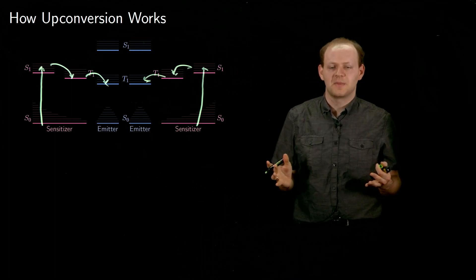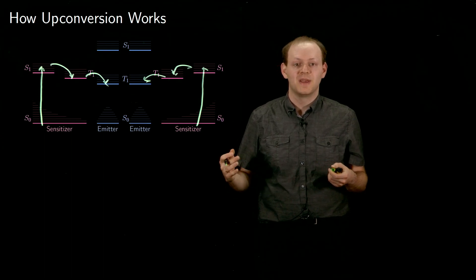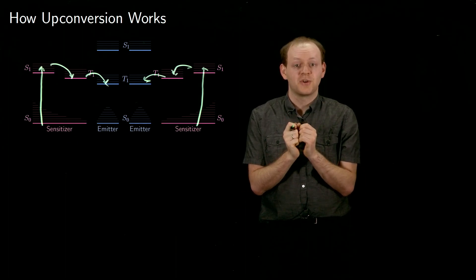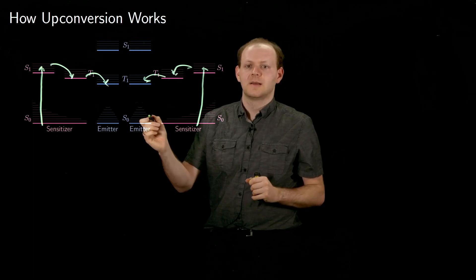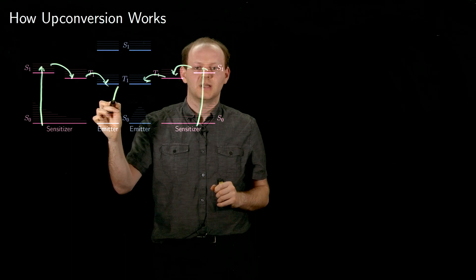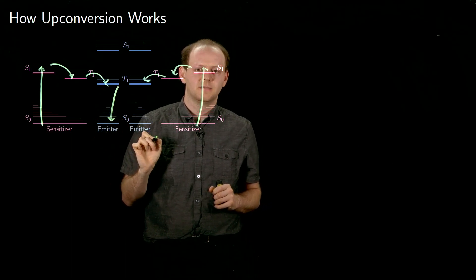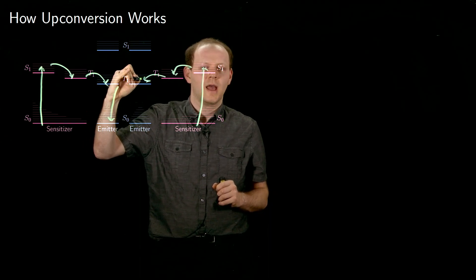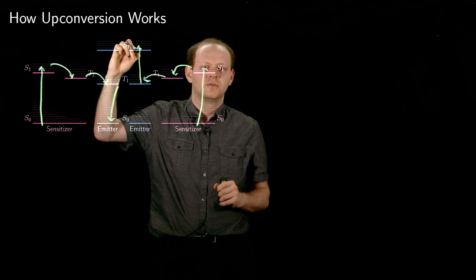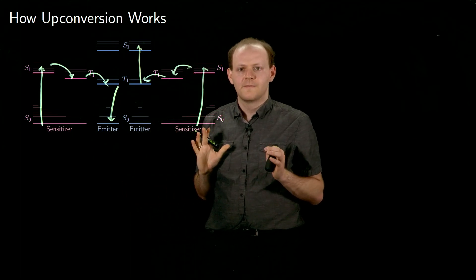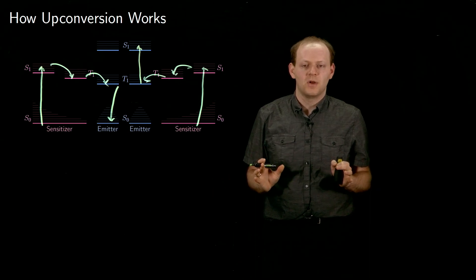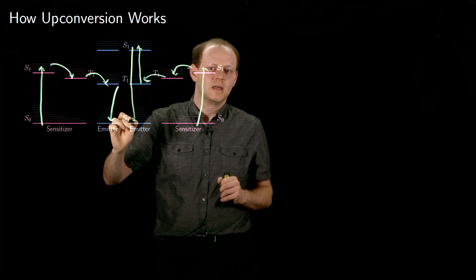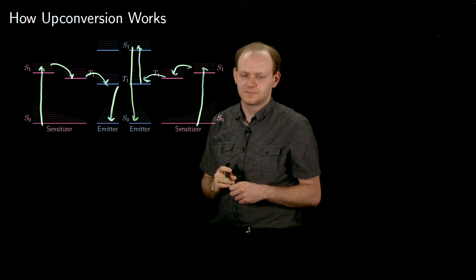Once many emitter molecules have got triplet excited states in them, they can begin to annihilate. This happens when two triplet excited states are close together — they will destroy each other. In one molecule, the triplet is changed to a ground state. The other molecule takes that energy, adds it to its own energy, and goes from a triplet excited state to a singlet excited state. Finally, the singlet excited state of the emitter molecule emits light, bringing all molecules now into the ground state, back where we started.